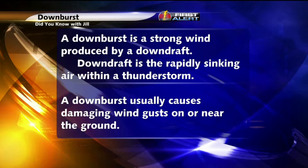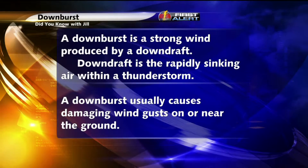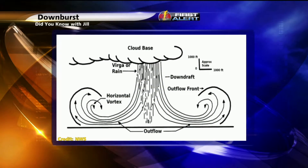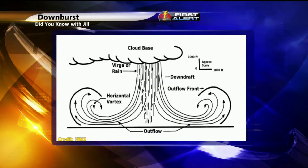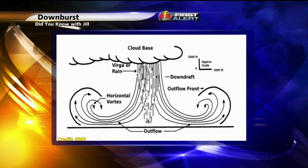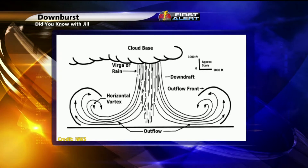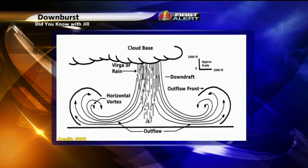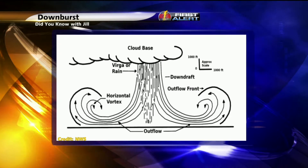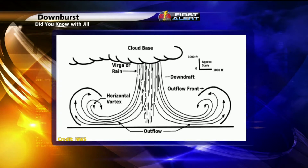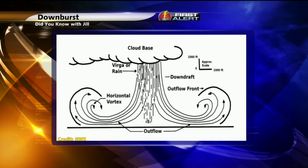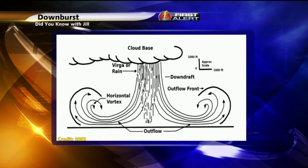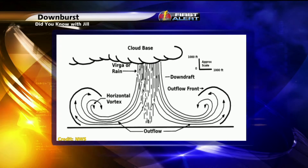They produce damaging wind gusts on or just above the ground. In the mid and upper level parts of the thunderstorm, the wind is moving very fast, and as the rain continues to fall, sometimes that swiftly moving air is also brought down to the surface. It sinks very rapidly, and once it hits the ground, it begins to curve back on itself. That's known as directional shear, as the wind is changing direction with height.